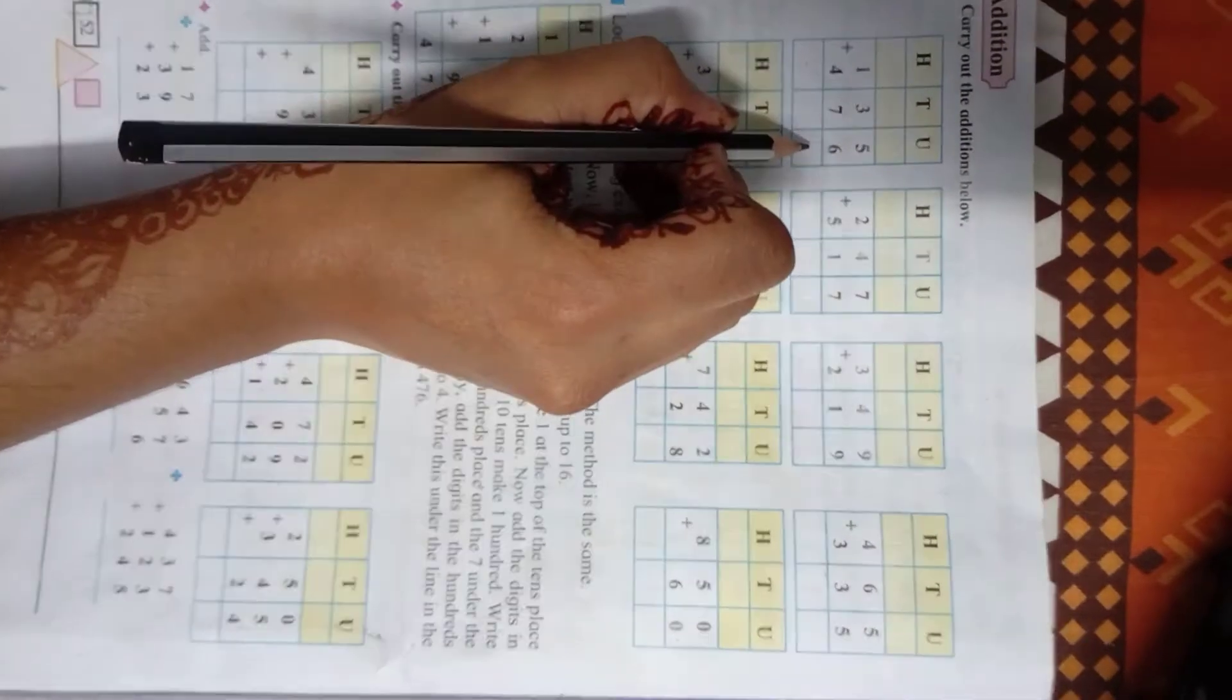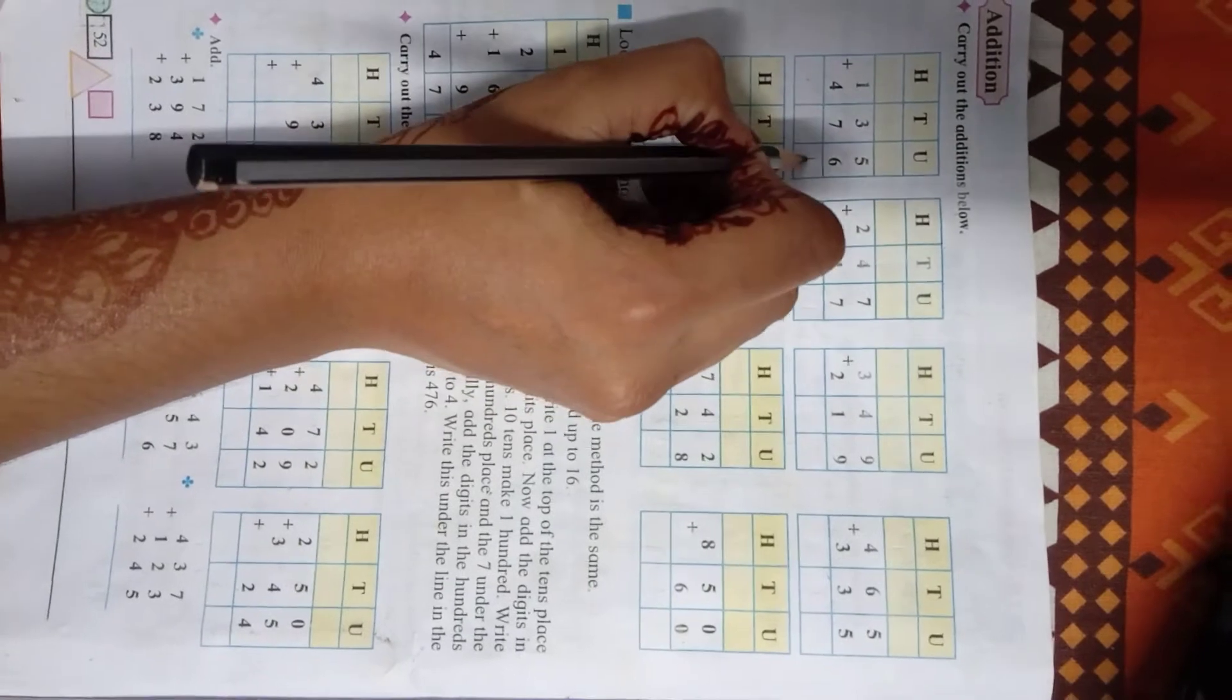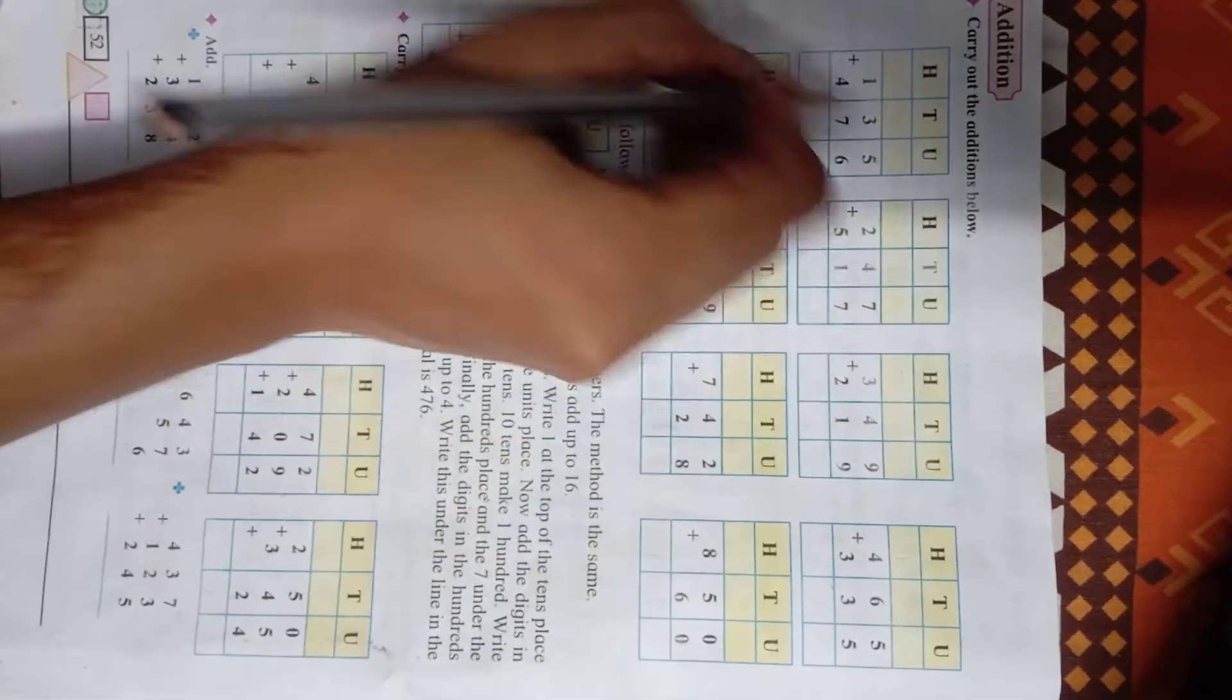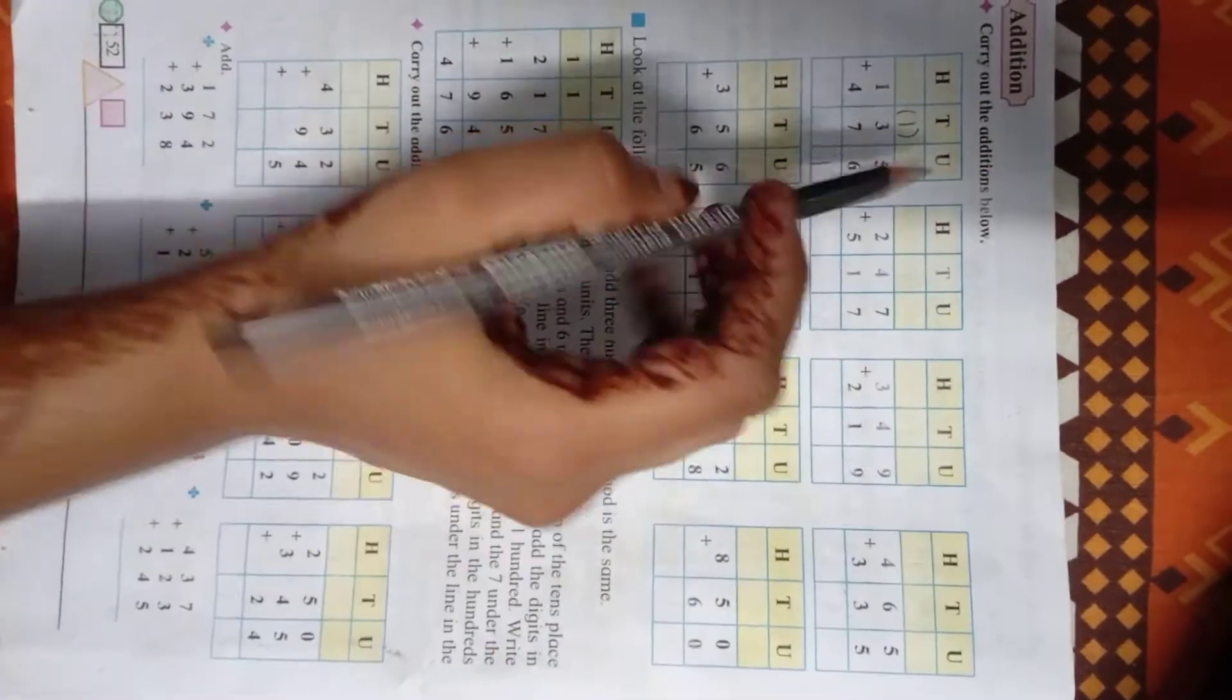So what will we write? Directly we will write here 11? No. So what we will write first? 1. Means first digit is 1, and second digit is 1. So 1 we will write here for carry.